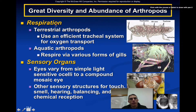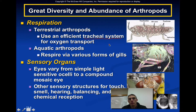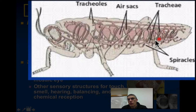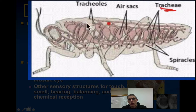Respiration in arthropods varies by habitat. Most terrestrial or land-dwelling arthropods use a very efficient tracheal system for oxygen transport — similar to our own trachea that connects mouth to lungs. In the grasshopper representation shown here, all the little tubes running throughout the animal are the trachea.